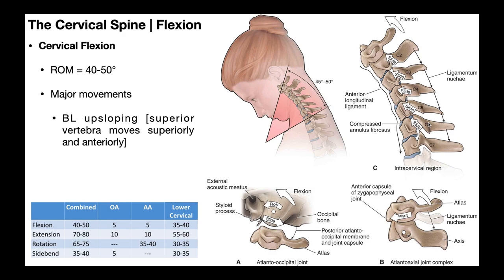This gliding movement occurs at the facet joints. I want you to think about that superior movement — if the vertebra above is moving superiorly relative to the vertebra below, what does that do to the facet joint? Because if the vertebra above is moving superiorly, there's more space between those articulating surfaces that make up the facet joint. So the facet joint actually gaps a little bit.